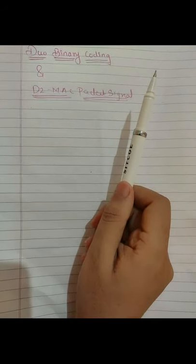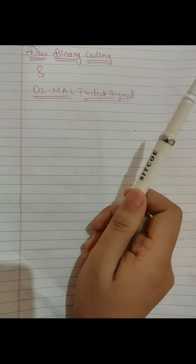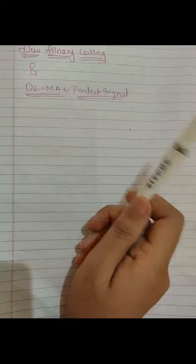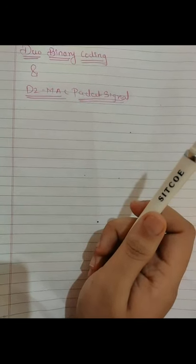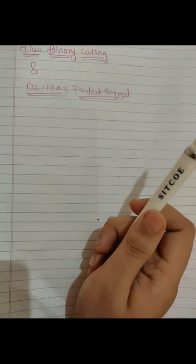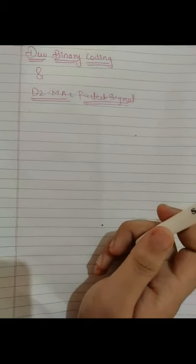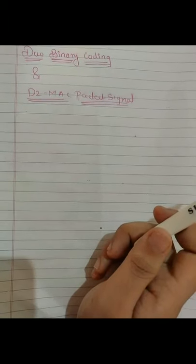D2 MAC packet signal is one of the variants of MAC components. D2 MAC is a satellite television transmission standard and a member of the Multiplexed Analog Components family. It was created to solve the D-MAC bandwidth problem. Various variants had problems such as bandwidth requirements, so newer variants like D-MAC and D2 MAC were developed. D2 MAC was developed for European cable systems.